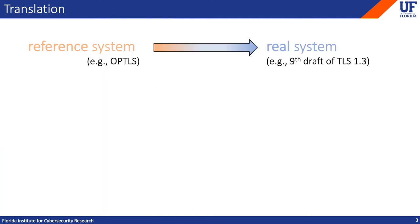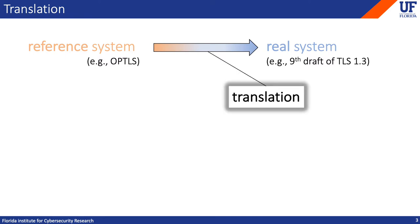Our goal in this work is to answer a more general version of this question. Starting with some reference system for which security is known, we want to infer the security of the real system derived from it. The reference system refers to the formal specification from the original analysis, and the real system is obtained by revising the spec in order to account for some observed behavior, like the details of the standard. I'll refer to this process as translation. Generally speaking, translation is the revision of a system specification in order to account for something not dealt with in the original analysis. And because changing the spec can result in an attack, it's important to thoroughly evaluate its impact on security.